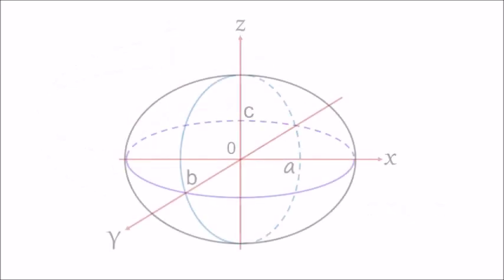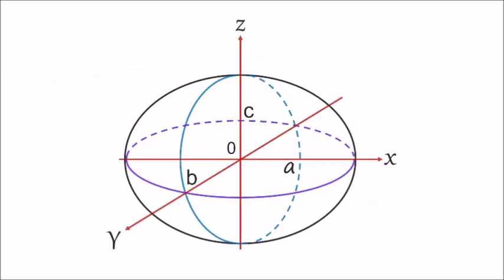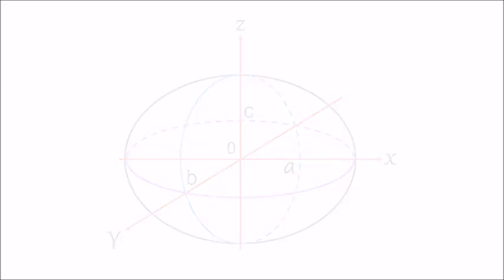This illustration presents the geometric definition of an ellipsoid. A, B, and C denote the three principal semi-axes.